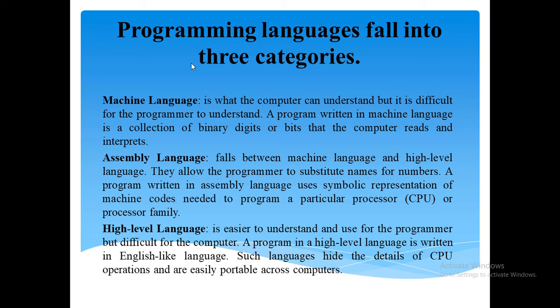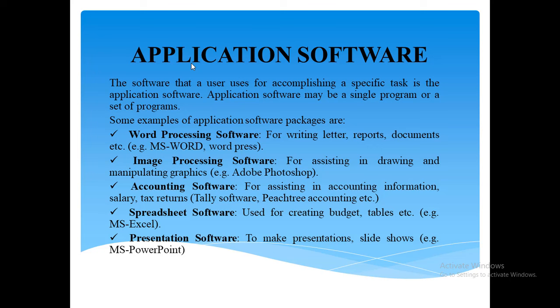We've discussed in detail the system software and grouped different types into different categories. We now move to the next type of software, which is the application software — the software that a user uses for accomplishing a specific task. Application software may be a single program or a set of programs written for a specific purpose, providing the required functionality for a specific task or software package.